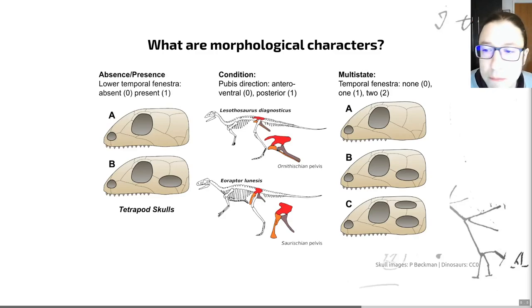There are also things called multi-state characters shown on the right hand side here. These are where you have multiple conditions that you can code into a single character. So for example, we can, in the tetrapods, code for the presence of no temporal fenestra, this hole. Or we can code for one, or we can code for two. And we can do that in an ordered fashion. So we can say that in order to go from none through to two, you have to go via one. Or we can do that in an unordered fashion. So you can say it's possible to go from none to two without having to go via one. And that impacts upon how we build the tree later.